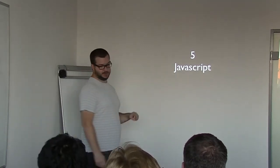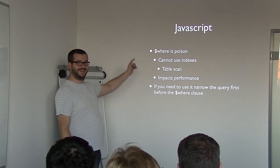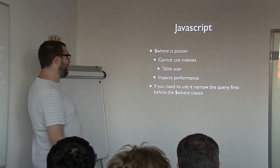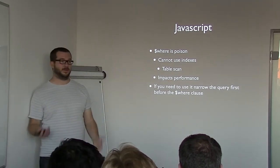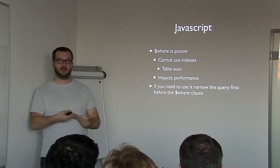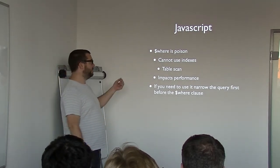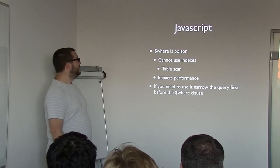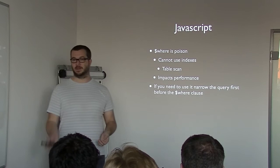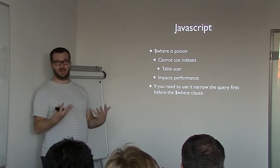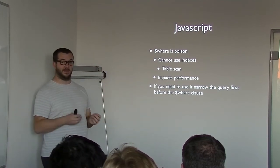JavaScript is probably the most abused part of the server. Does anyone use $where? Don't. $where cannot use indexes. Some people have valid use cases — for example, comparing two fields within the same document, which you can't do with the regular query language. But $where can't use any indexes because there's no way for the JavaScript engine to communicate which index it needs. It has to go through every single document, causing a full collection scan. It impacts performance badly on big collections. If you have a hundred documents it probably doesn't matter, but on large collections you'll have a problem.